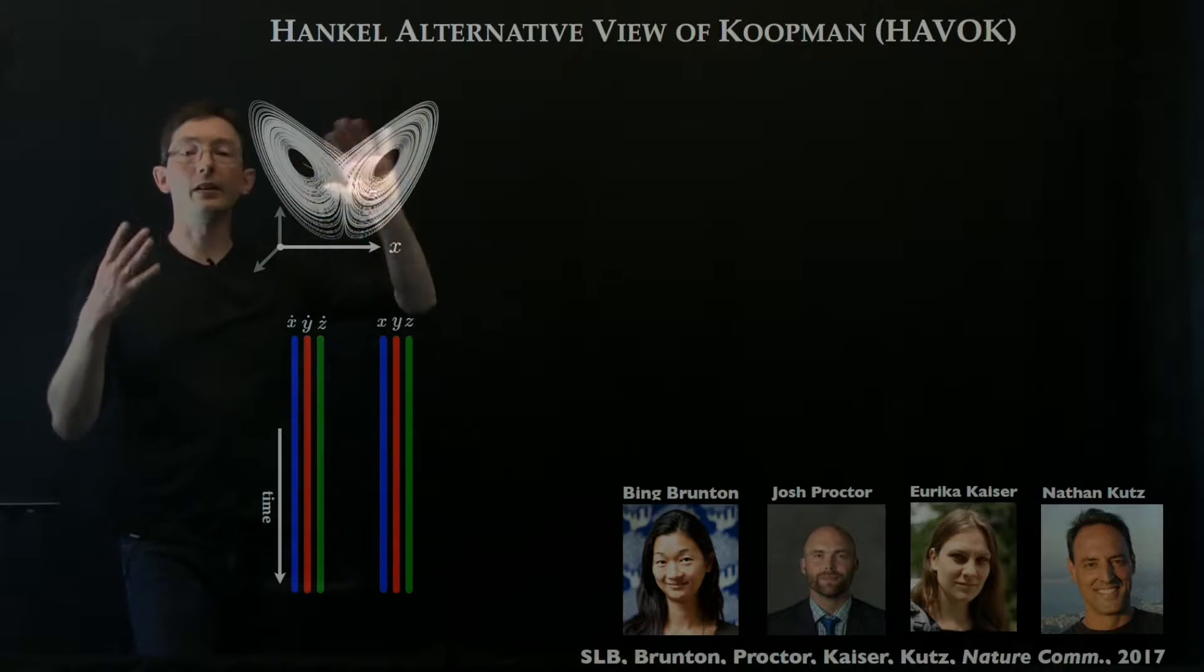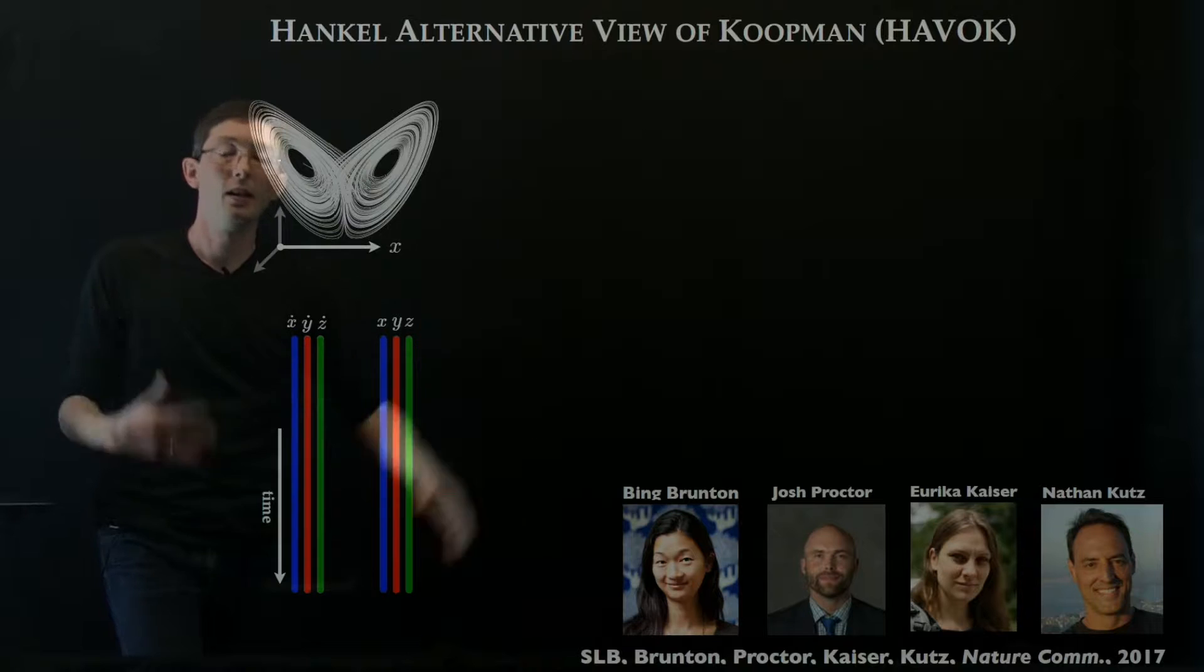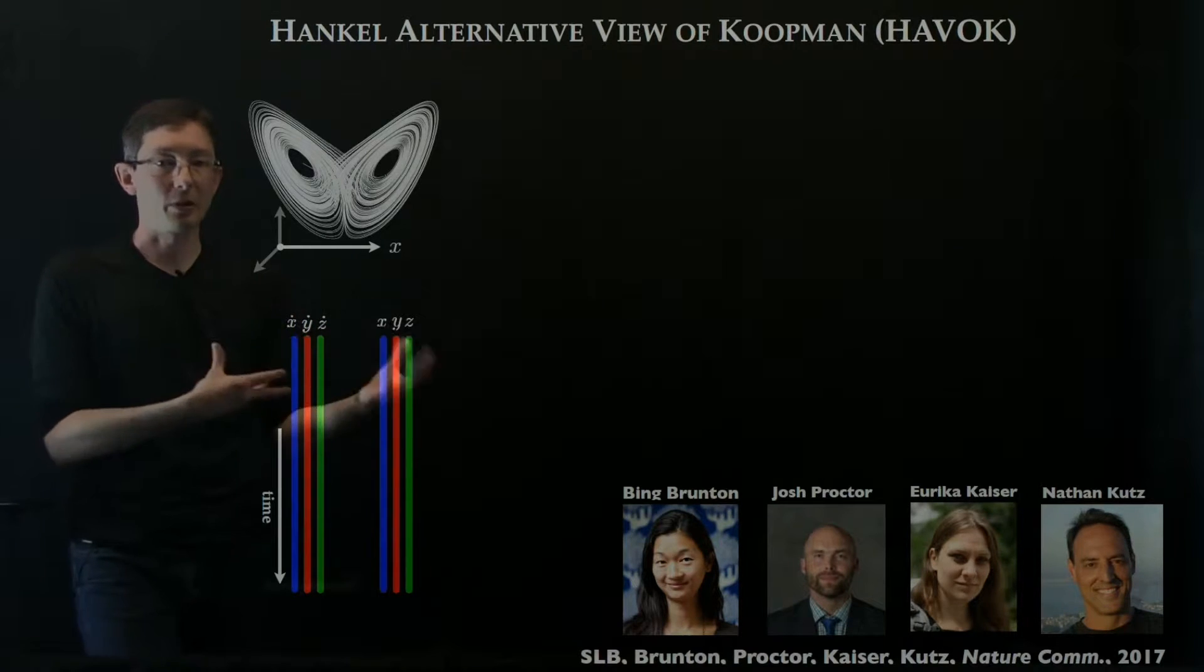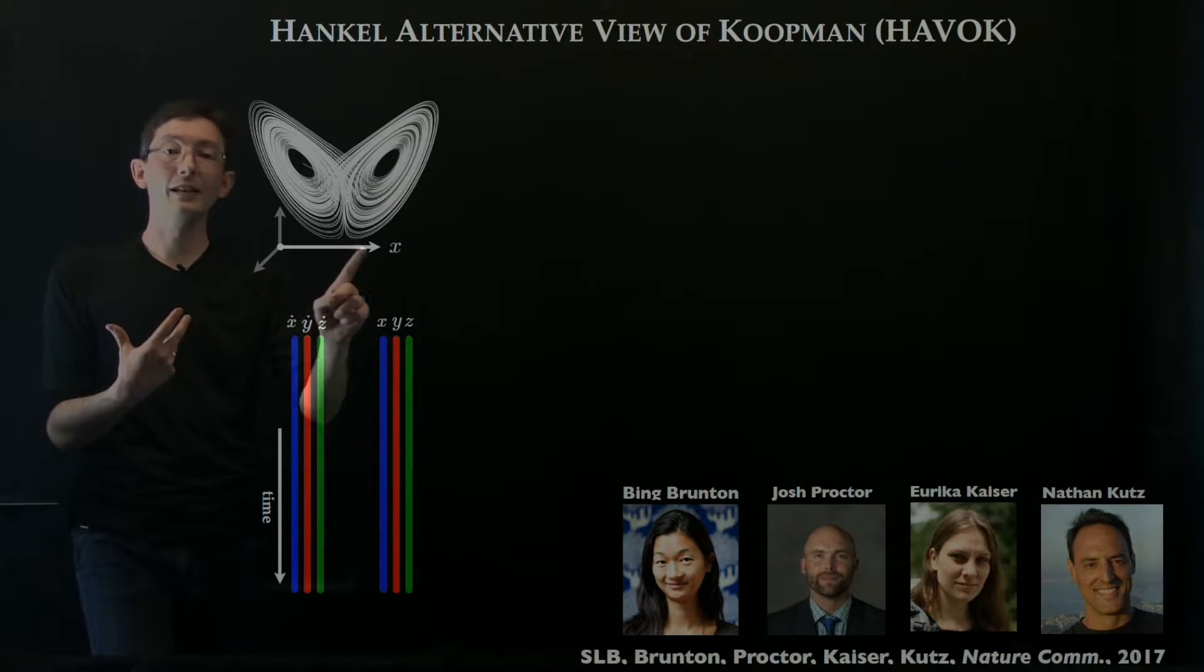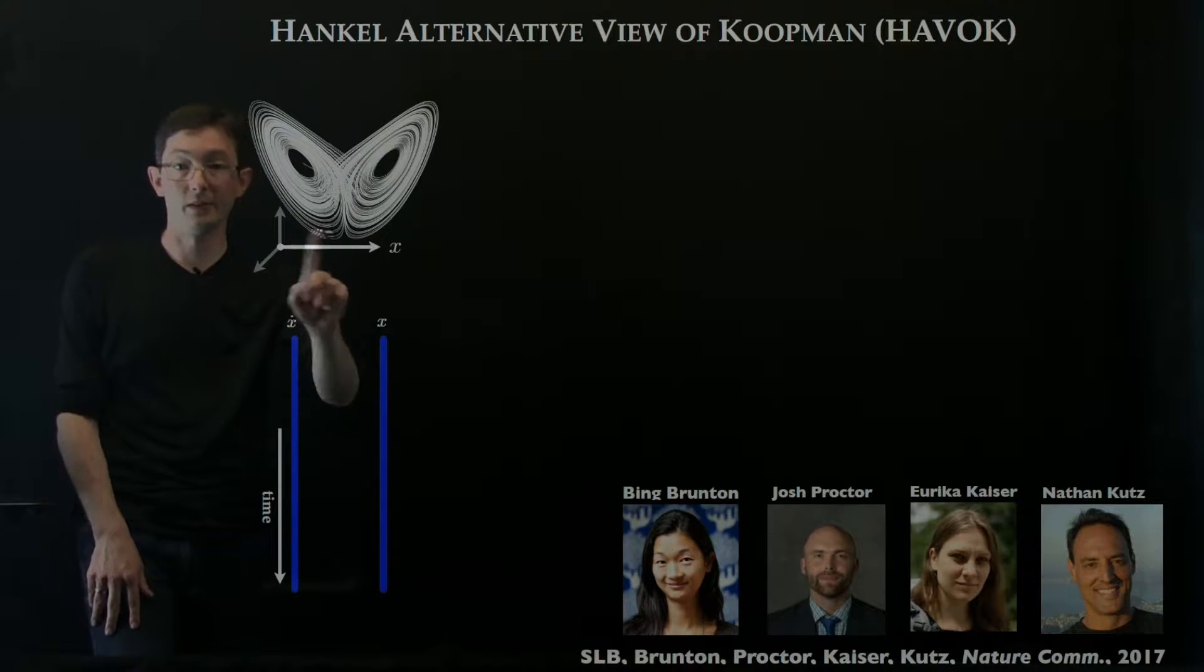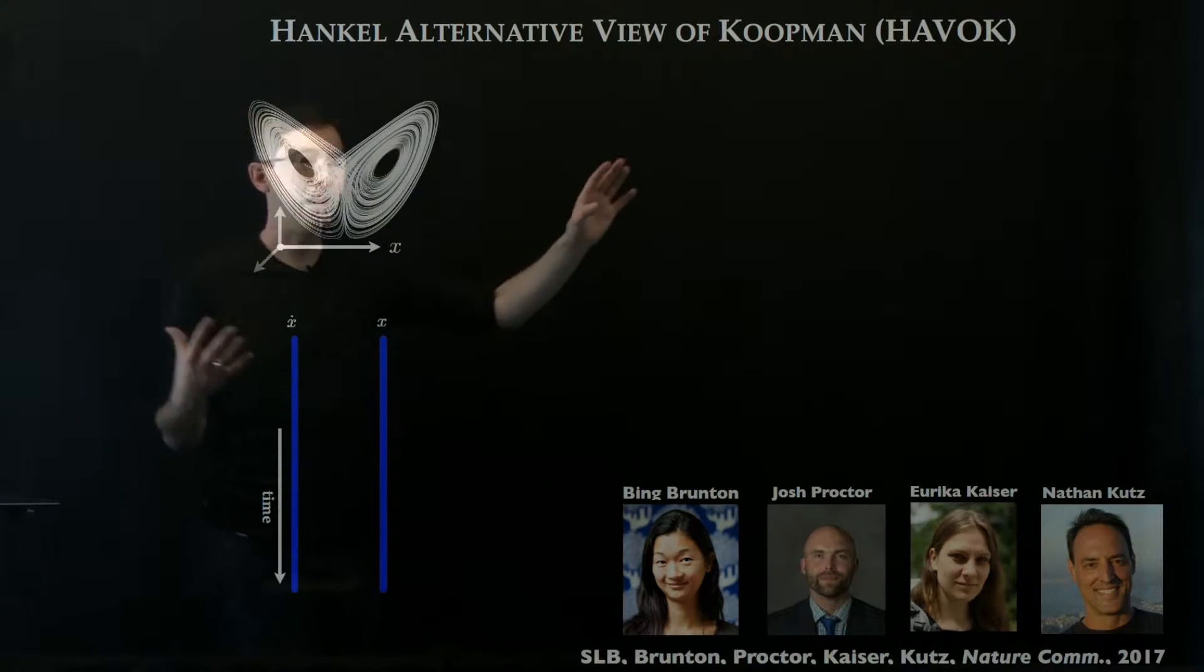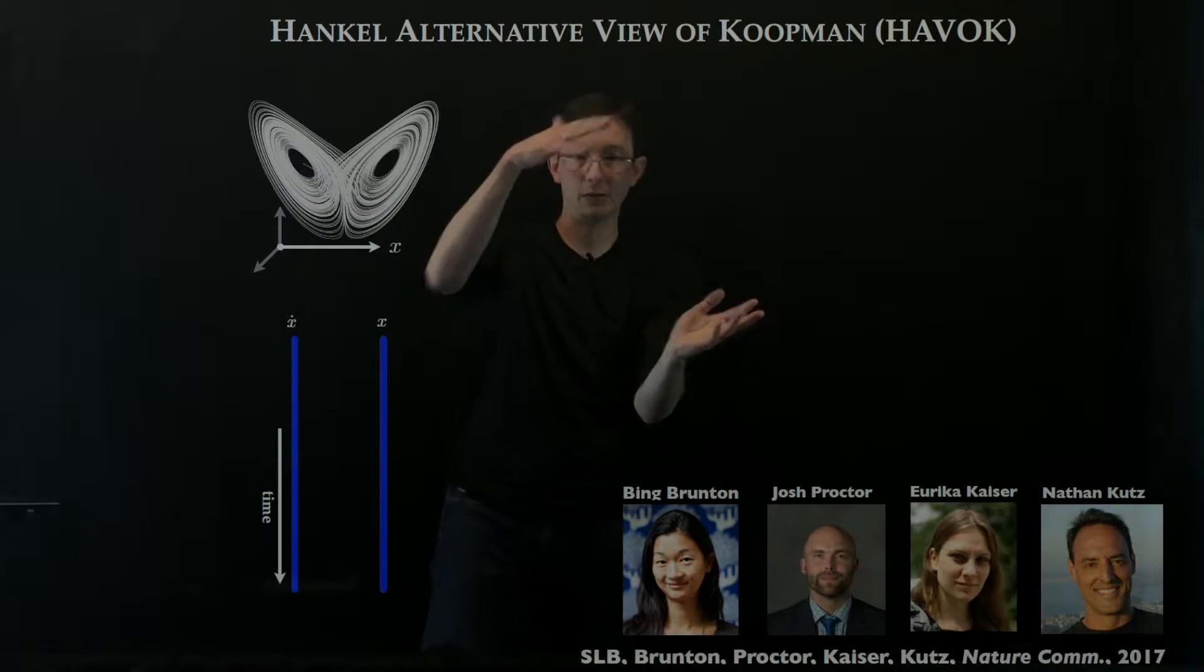One thing I'll tell you about very briefly is a method we developed a while back called the Hankel Alternative View of Koopman. This is work with Bing, Josh, Eureka, and Nathan. This was essentially after we developed our sparse identification of nonlinear dynamics method, we started thinking, if I only had limited measurements of this chaotic system, if I only had measurements of x, this first variable, and maybe its time derivative, could I build a dynamical system model that describes this behavior. At the time we had no idea that this was going to come back to Koopman theory, so this is kind of an aside that came back to Koopman.